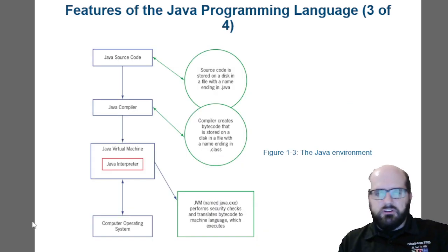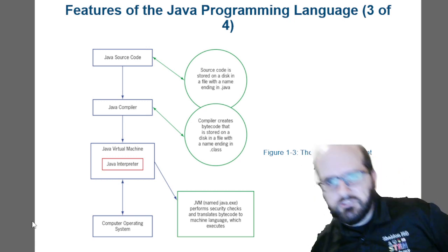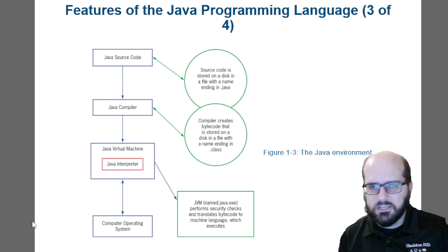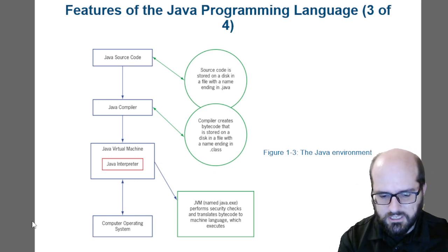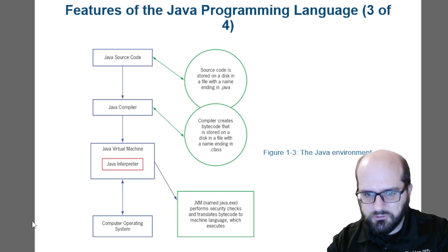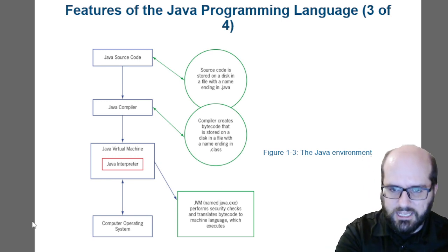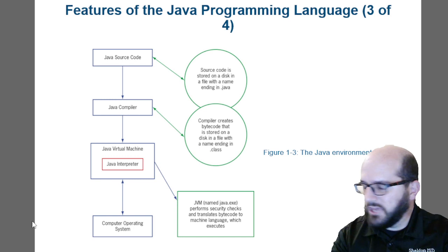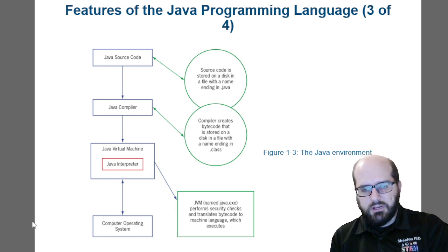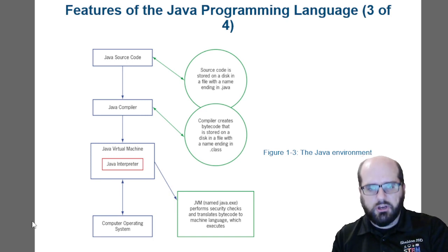This is how the Java environment works. Source code is stored on disk in a file with a name ending in .java. The computer creates bytecode — you type 'javac' and the name of your file — and it creates bytecode stored on disk with a name ending in .class. Then the Java virtual machine performs security checks, translates that bytecode into machine language, executes it, and sends it to the operating system. It's architecturally independent, so it's irrelevant which operating system you're using.